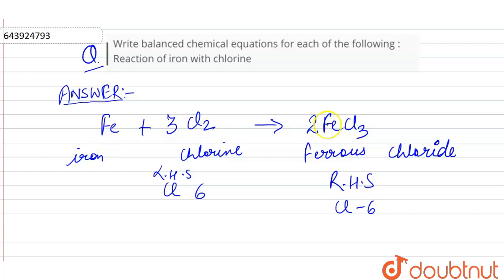Now Fe on left-hand side is 1, but on right-hand side is 2. So balance Fe by putting 2 on the left side. Now both LHS equals RHS, hence the equation is balanced.